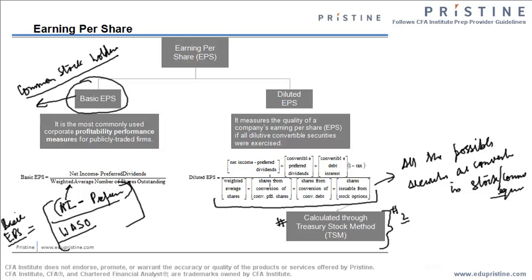We have the conversion factors associated with each convertible security. For example, suppose one convertible preferred stock can be equivalent to 100 common equities. Using those relationships, we can find the number of shares in the conversion. However, in the case of shares issued from stock options, the procedure is slightly different, and the method which gives us the final number used as the denominator in diluted EPS is called TSM, or the Treasury Stock Method.